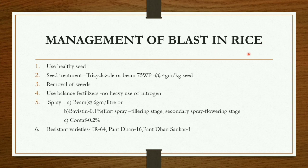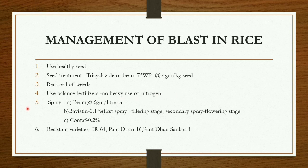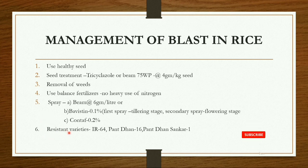Management of blast disease in rice includes the following steps: use healthy seed to avoid blast. Seed treatment should be given with Tricyclazole or Beam 75 wettable powder at the rate of 4 grams per kg of seed. Removal of weeds must be followed. Use balanced fertilizers — no heavy use of nitrogen, which may lead to crop loss. Spray Beam at 6 grams per liter or Bavistin at 0.1 percent; the first spray at tillering stage, second spray at flowering stage. Contaf at 0.2 percent can also be used. Following resistant varieties such as IR-64, Panth Dan 16, Panth Dan Shankar 1 can help manage blast disease.